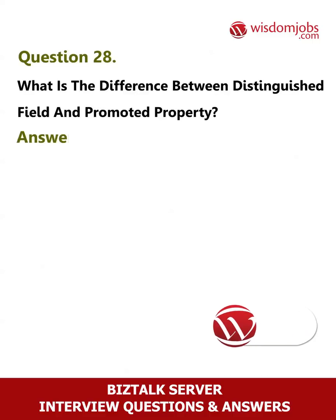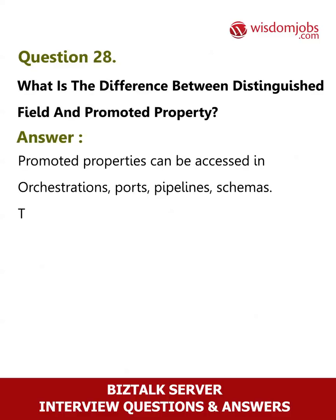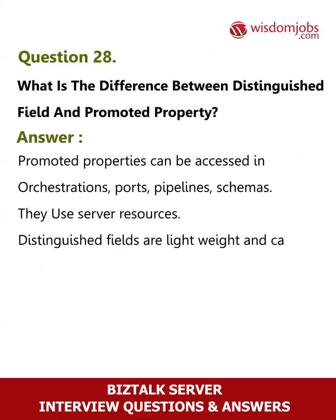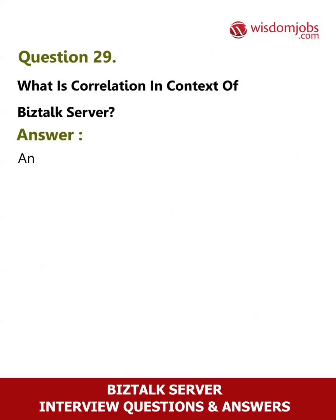Question 28: What is the difference between a distinguished field and a promoted property? Answer: Promoted properties can be accessed in orchestrations, ports, pipelines, and schemas — they use server resources. Distinguished fields are lightweight and can be accessed only in orchestrations.